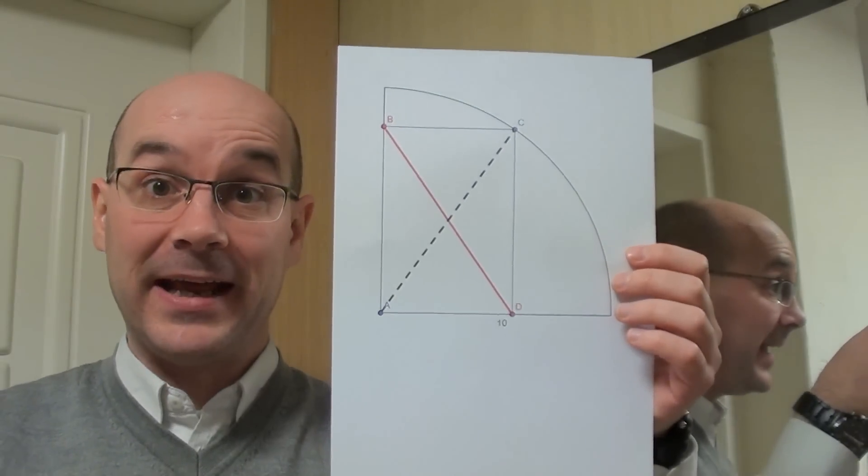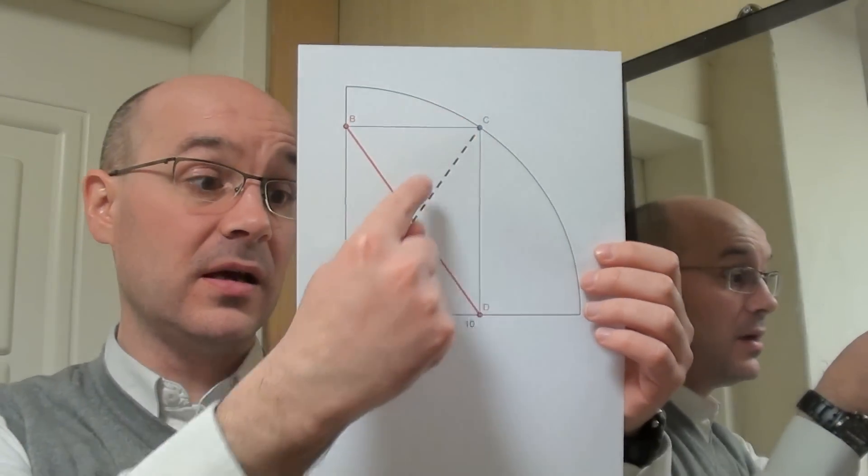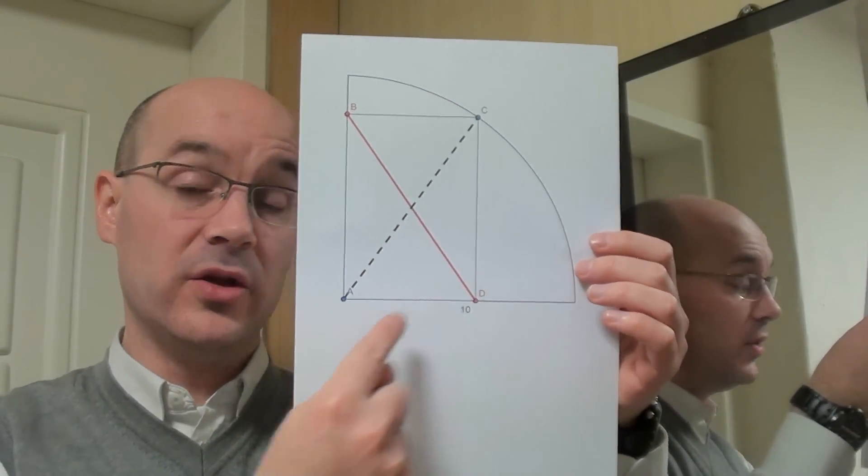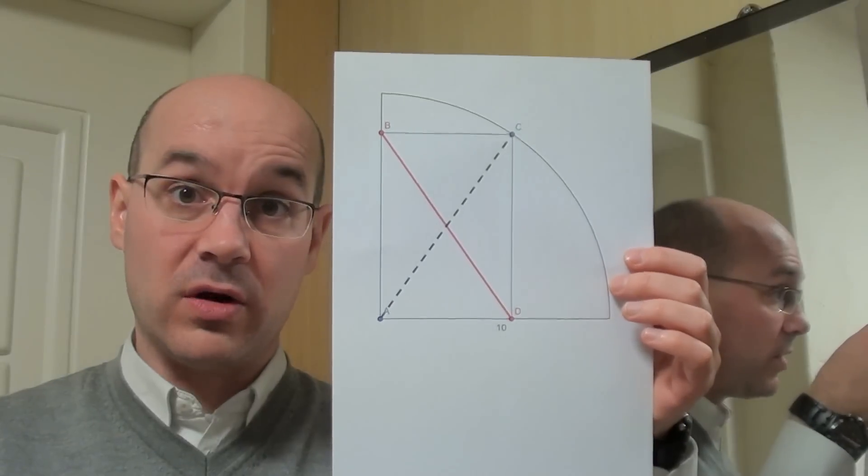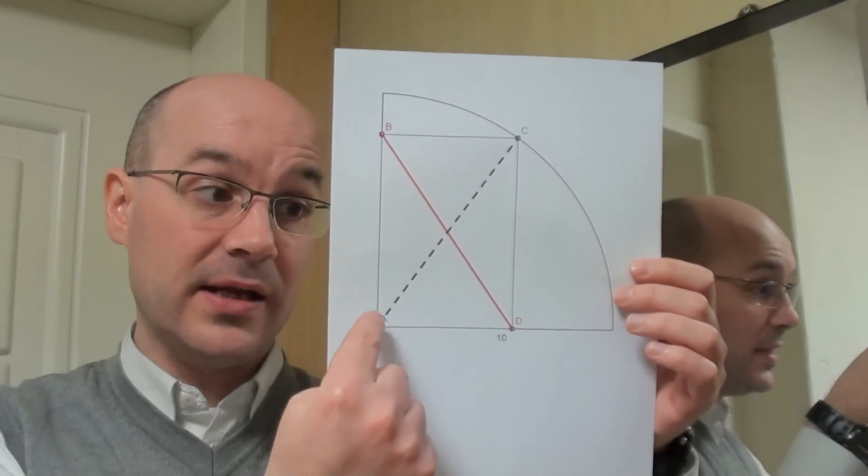And since AC, as you can see, is actually the radius of the quarter circle, then AC is 10.